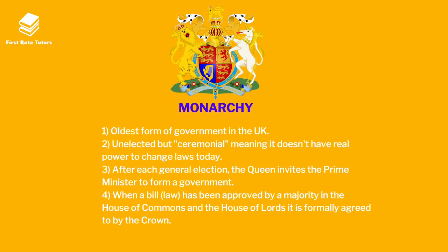The monarchy is the oldest form of government in the UK. It is unelected and hereditary — the queen passes the crown to her children. However, today the monarch has very little power; they have a largely ceremonial role and cannot change laws. After each general election, the monarchy invites the Prime Minister to form a government. When a bill has been approved by a majority of the House of Commons and the House of Lords, it is formally agreed to by the Queen or King.